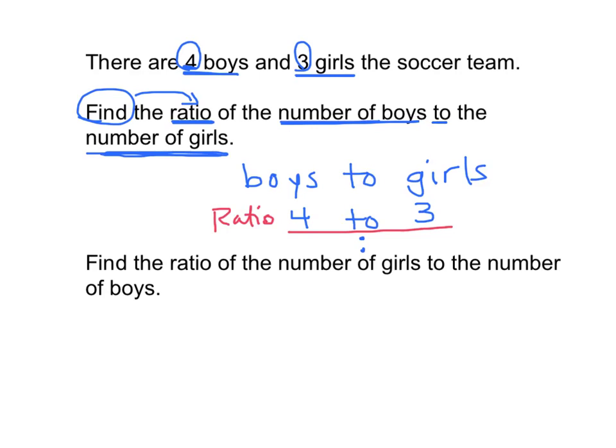So again, the ratio of the number of boys to girls. How many boys are there? Four. And how many girls are there? Three. So the same ratio, boys to girls, can be written in two different ways. You can write it as 4 to 3, the word 'to', or 4 colon 3, the symbol for 'to', which is the colon.